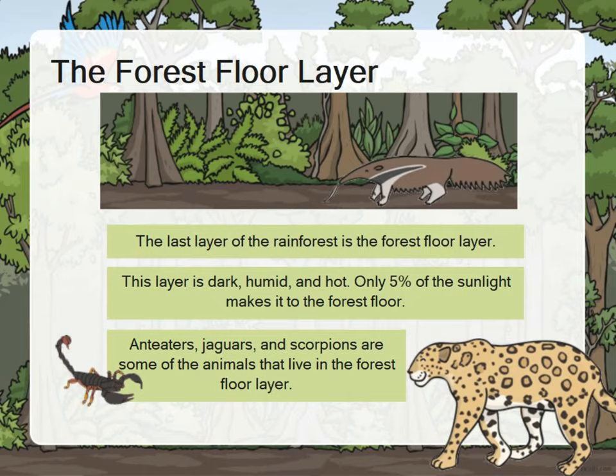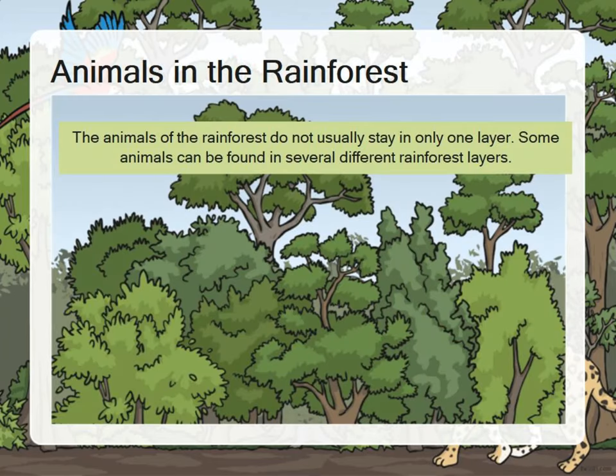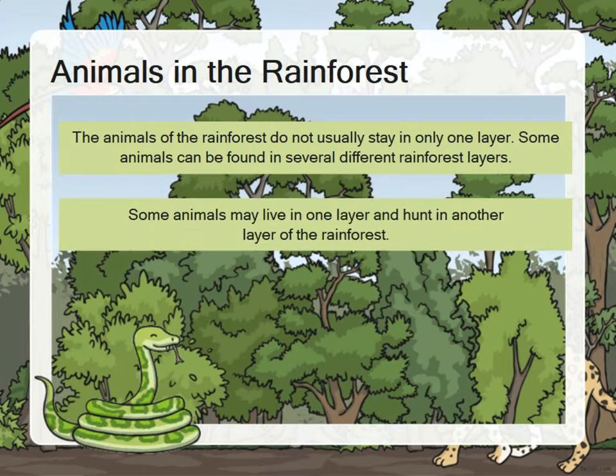Animals in the rainforest do not usually stay in only one layer. Some animals can be found in several different rainforest layers. Some animals may live in one layer and hunt in another layer of the rainforest.